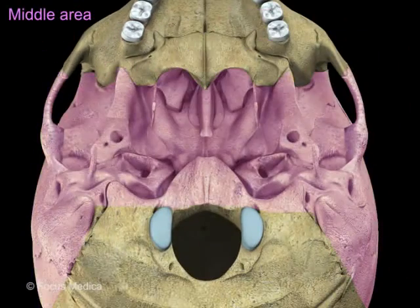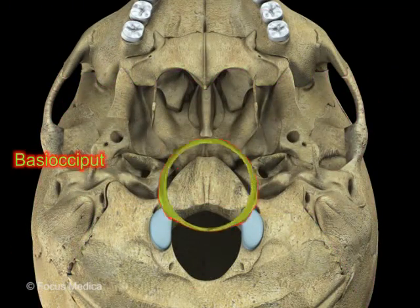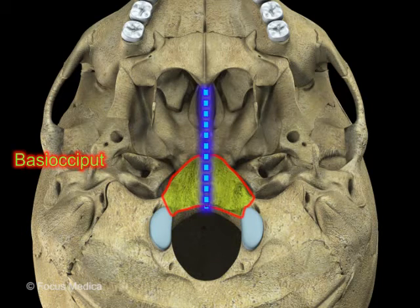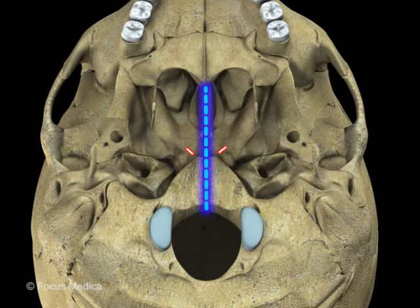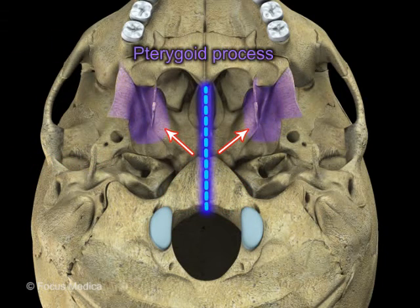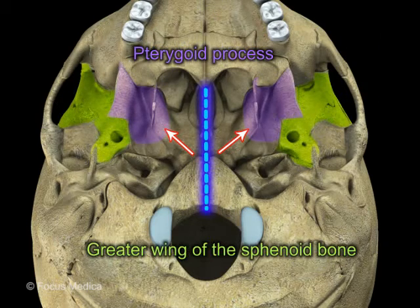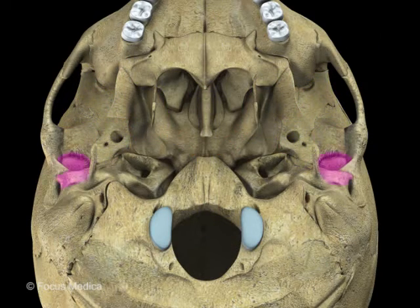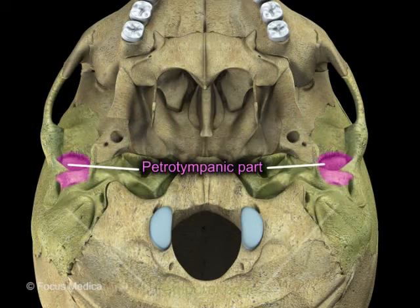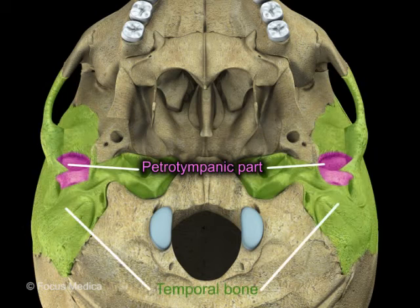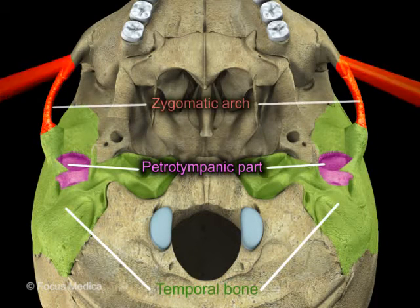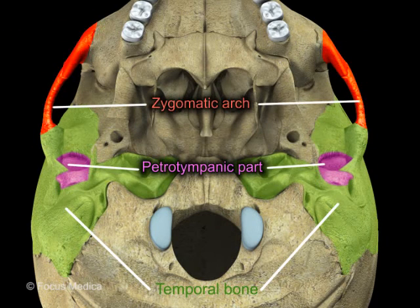The middle area is occupied by the basioccipital in the midline. Laterally are the pterygoid process and the greater wing of the sphenoid bone. The petro-tympanic part of the temporal bone and the zygomatic arch also contribute to this area.